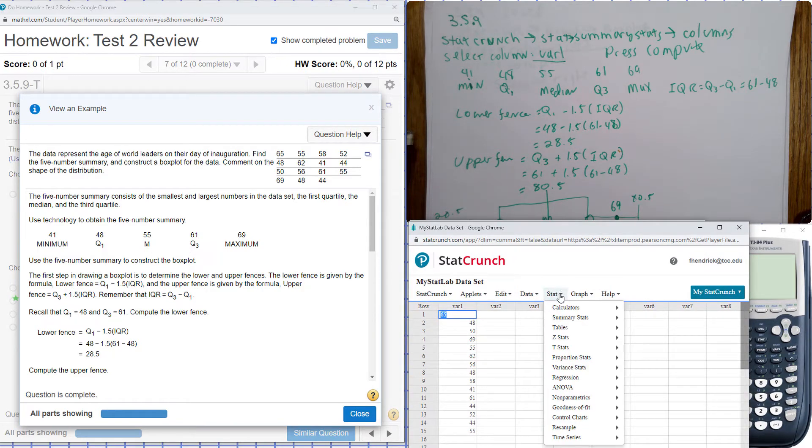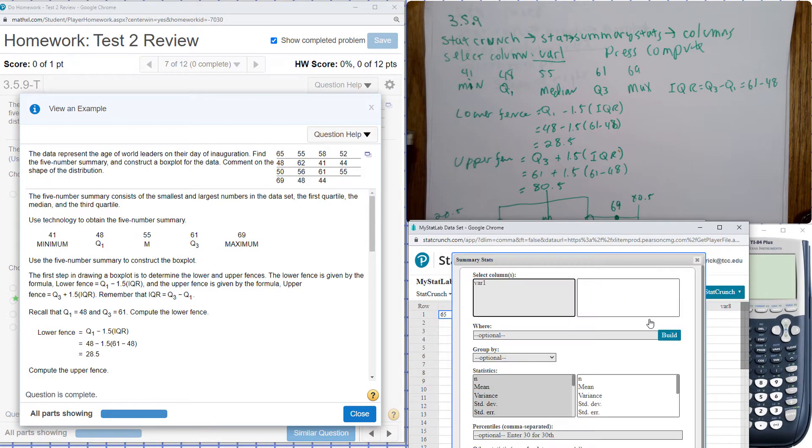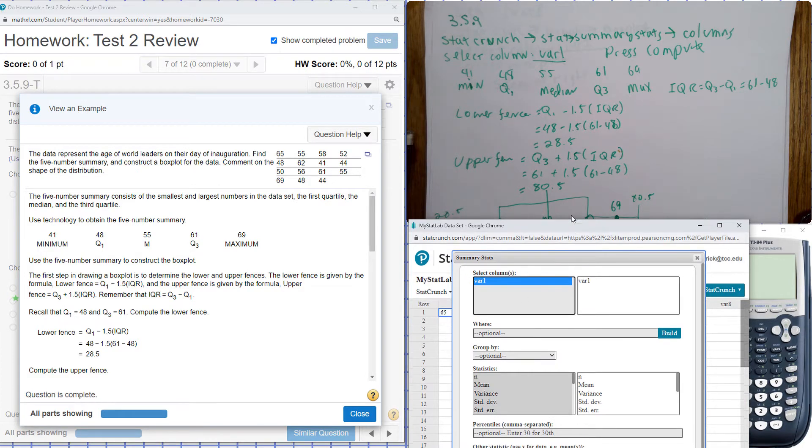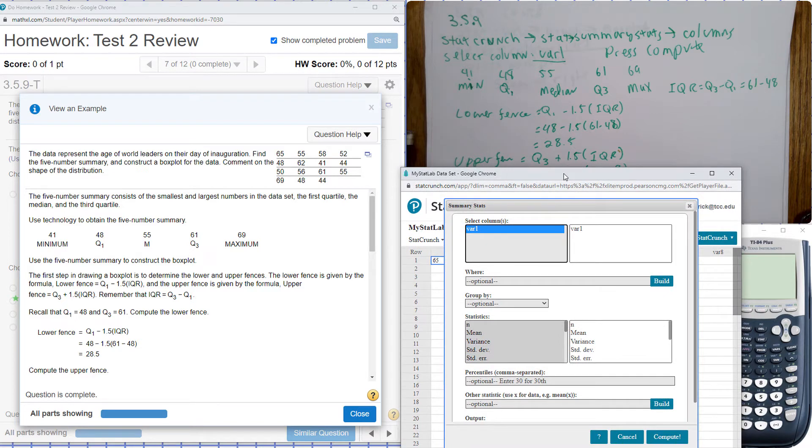And go to Stats, Summary Stats, and then Columns, select vars, and hit compute.